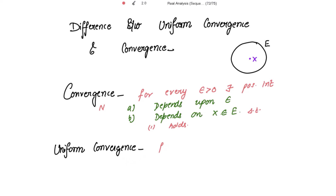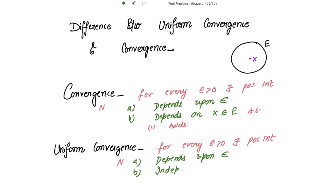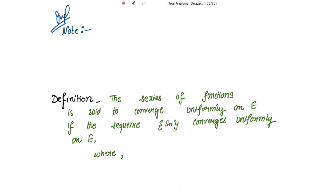For uniform convergence, for every epsilon positive, there exists a positive integer N that depends upon epsilon and is independent of the point X belonging to E, such that (1) holds. Note that uniform convergence implies convergence, but not vice versa. However, non-convergence implies non-uniform convergence.